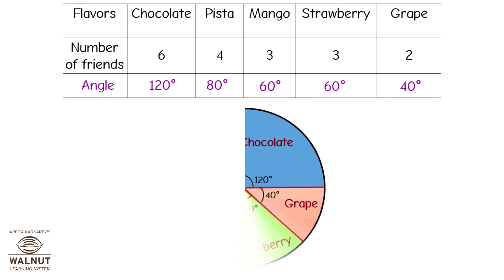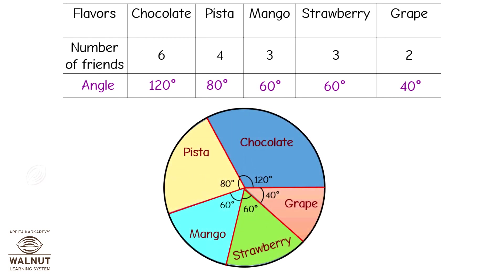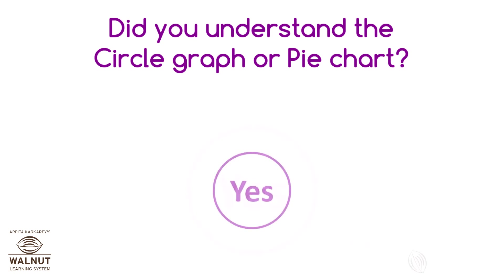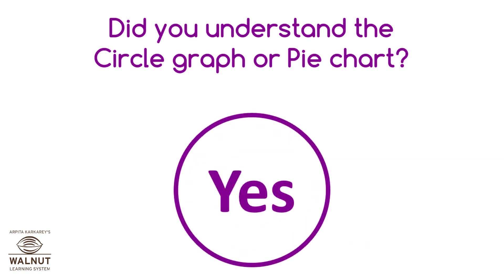Now you can quickly draw the pie chart. Make sure you write the angles and the names of the sections too. Did you understand the circle graph or pie chart? Yes!